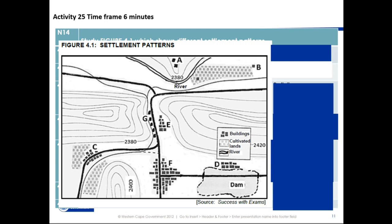Then let's look at this one — it's all along the road, so it is in a line. Therefore it is a linear shape.